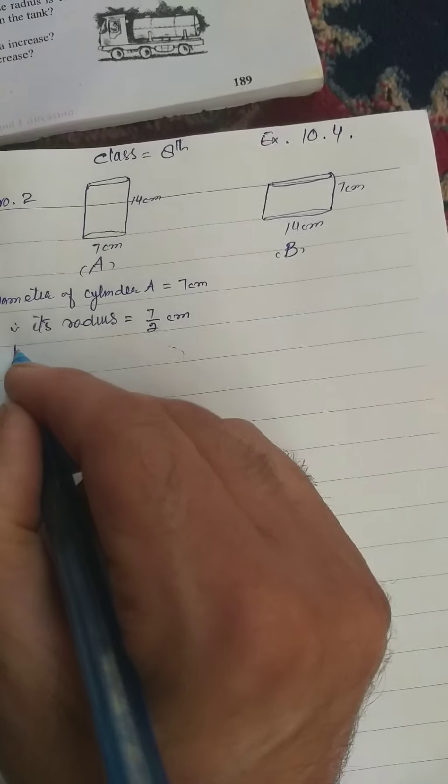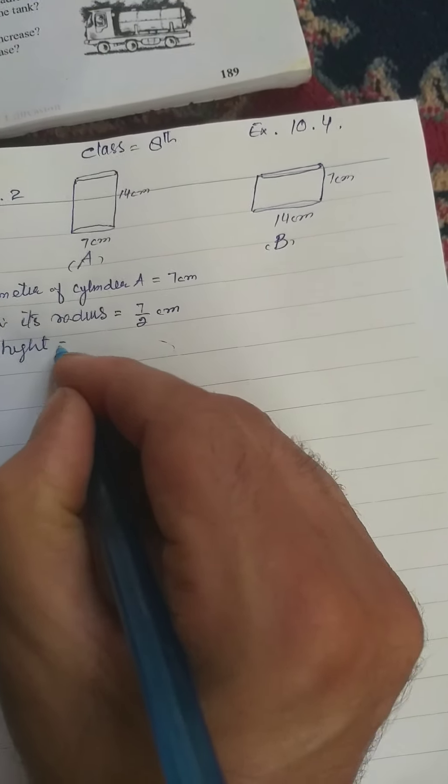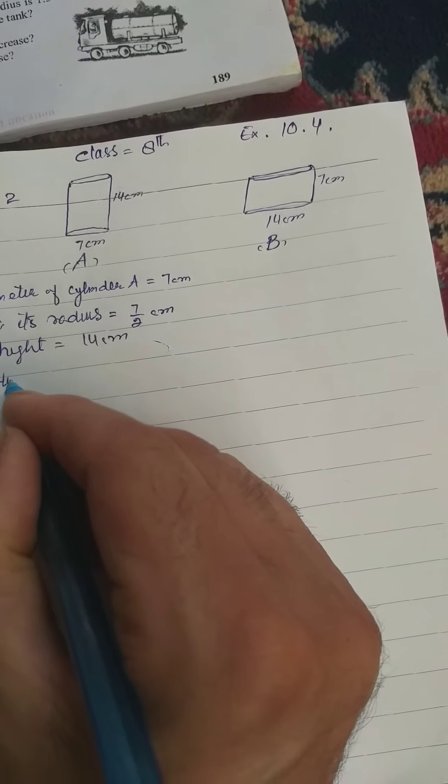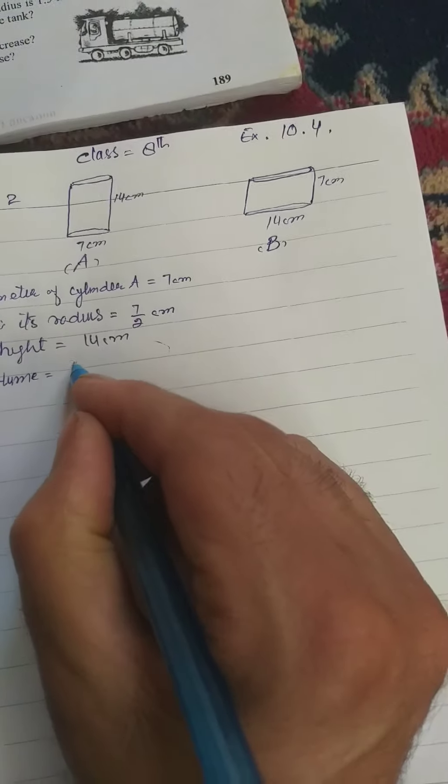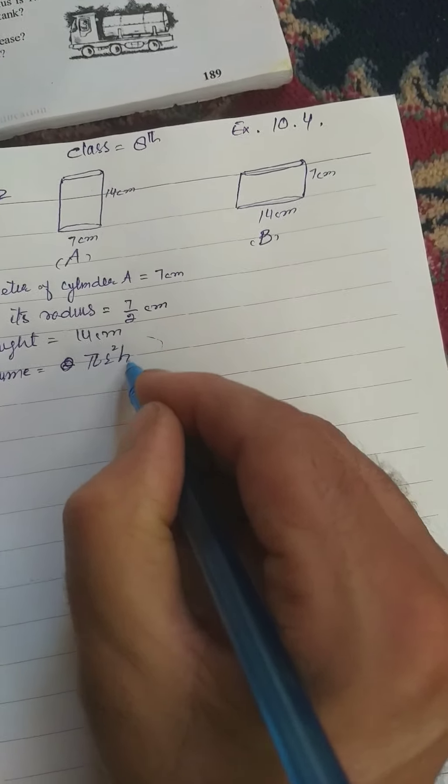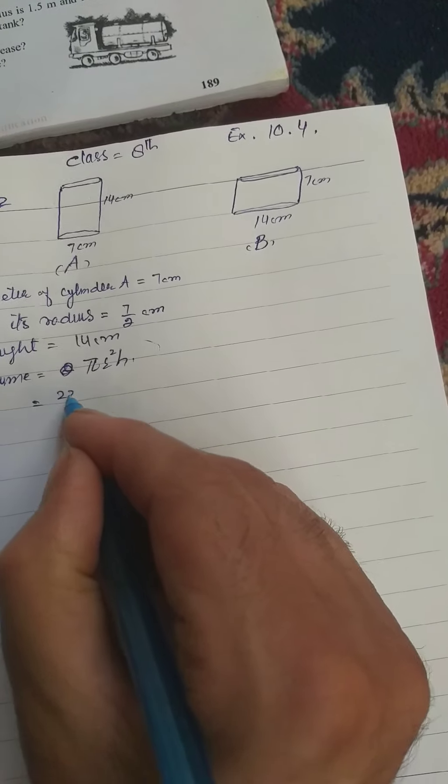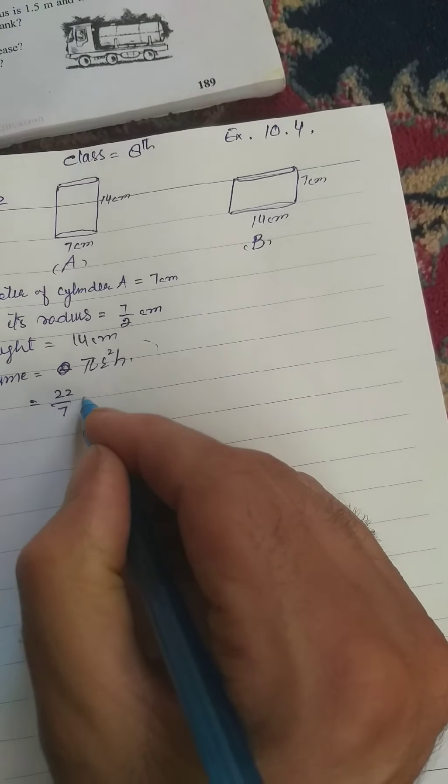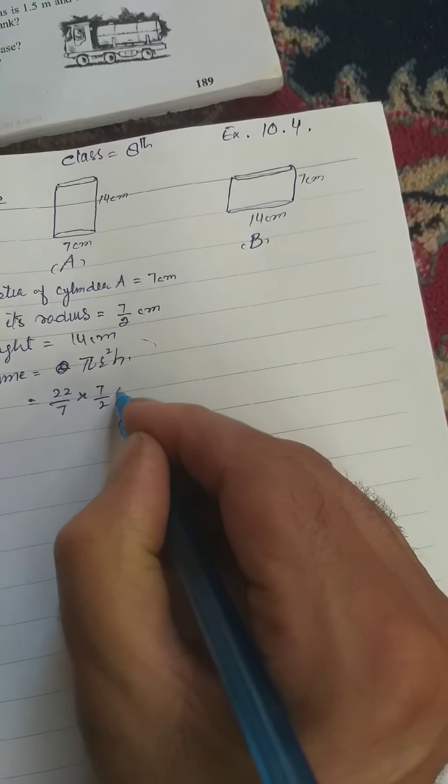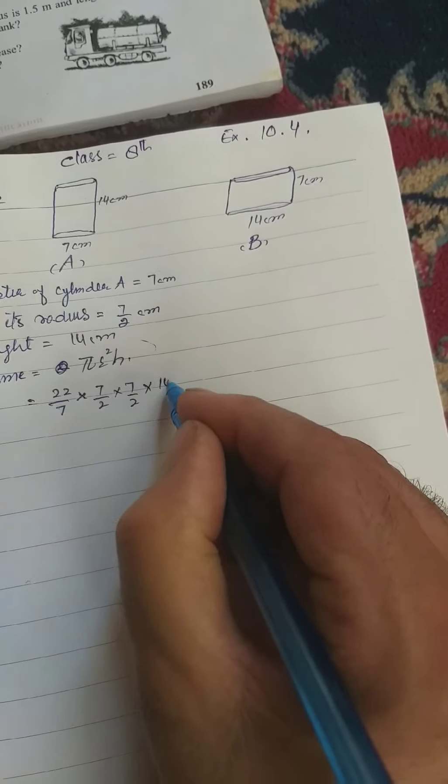Height is given, height is equal to 14cm. Cylinder A, volume of cylinder A is πr²h where π is equal to 22 divided by 7, into r squared, 7 by 2 into 7 by 2, into h 14.